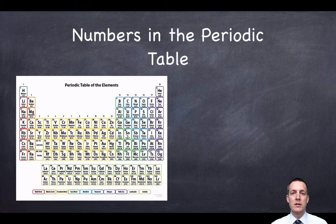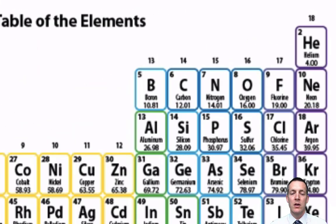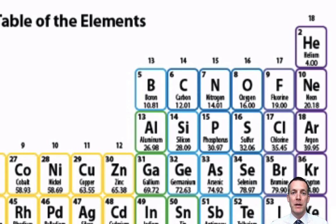This periodic table is slightly different — it's got two numbers in every box. Focusing on those same elements again, we can see that the atomic number, the one going up by one each time, is now in the top left of the box. That emphasises the point that it's not important where it is. It's joined by another number which isn't going up by one each time but is always bigger than the atomic number. This larger number is called the mass number. Some periodic tables have even more numbers, but the two we're most interested in are the atomic number and the mass number.